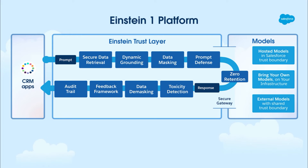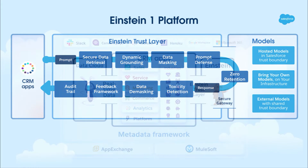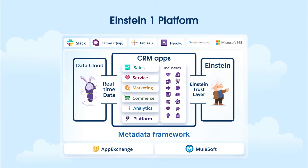This is why we have introduced the Einstein Trust Layer as part of the Einstein One platform. The Einstein One platform integrates AI into every aspect of Salesforce, ensuring that developers have access to the latest technology through innovations like Hyperforce and Data Cloud. At its core, it encompasses CRM solutions like Sales Cloud and Service Cloud, enhanced by the metadata framework which introduces capabilities such as Lakehouse architecture and insights from Einstein.